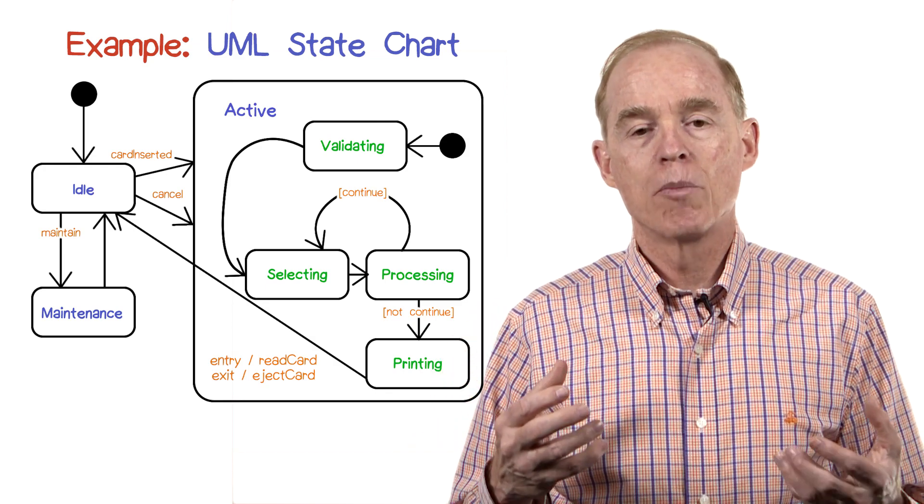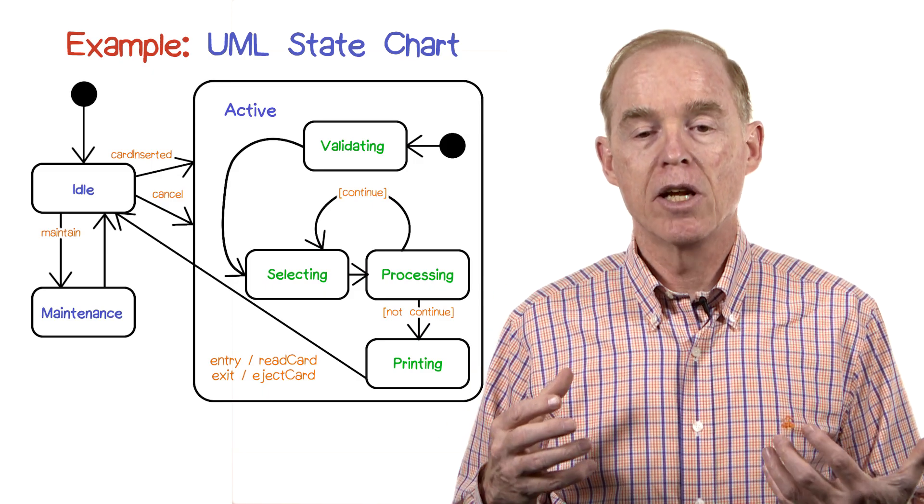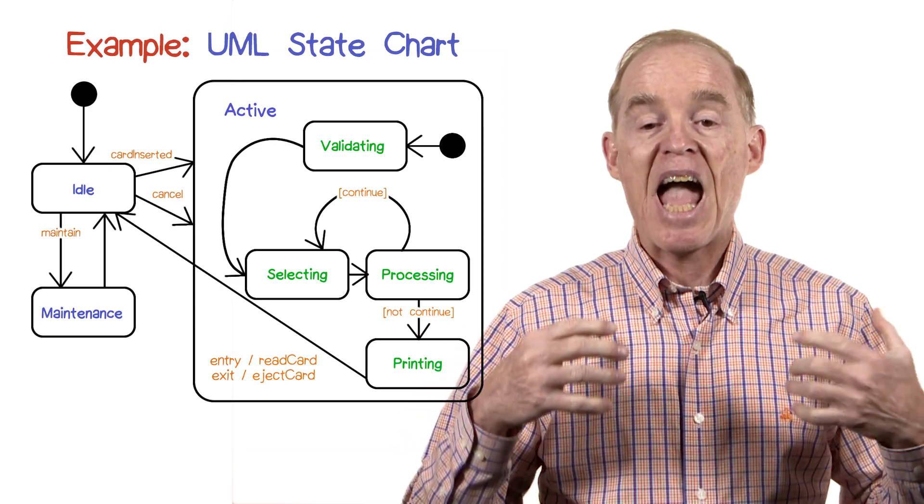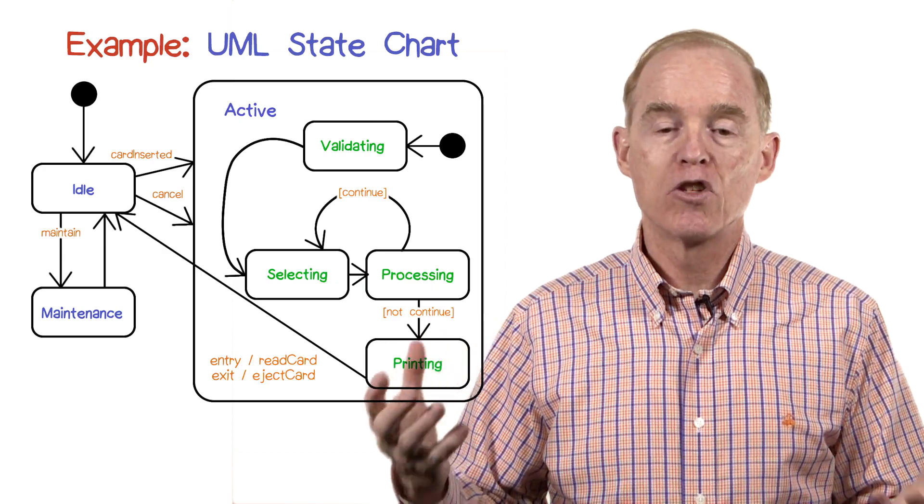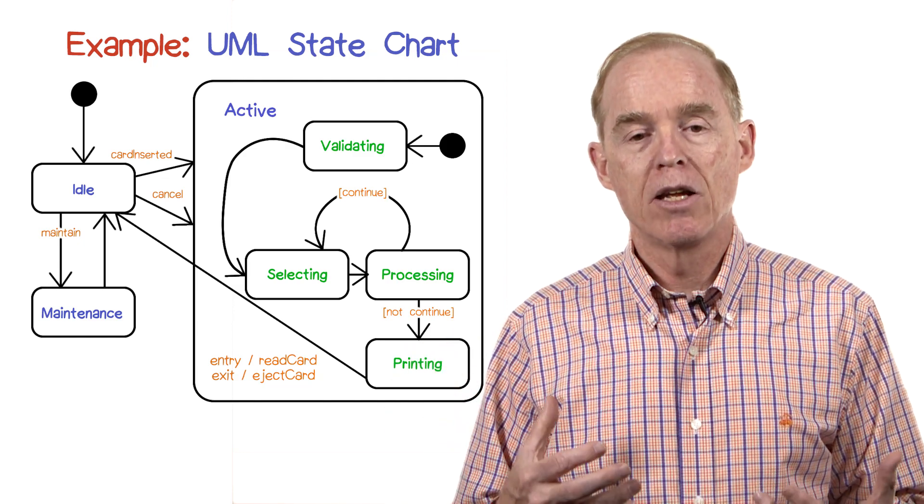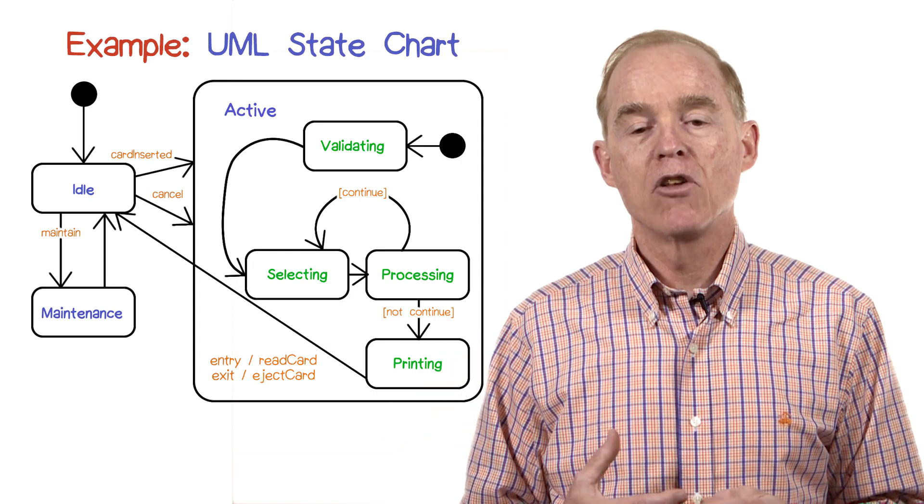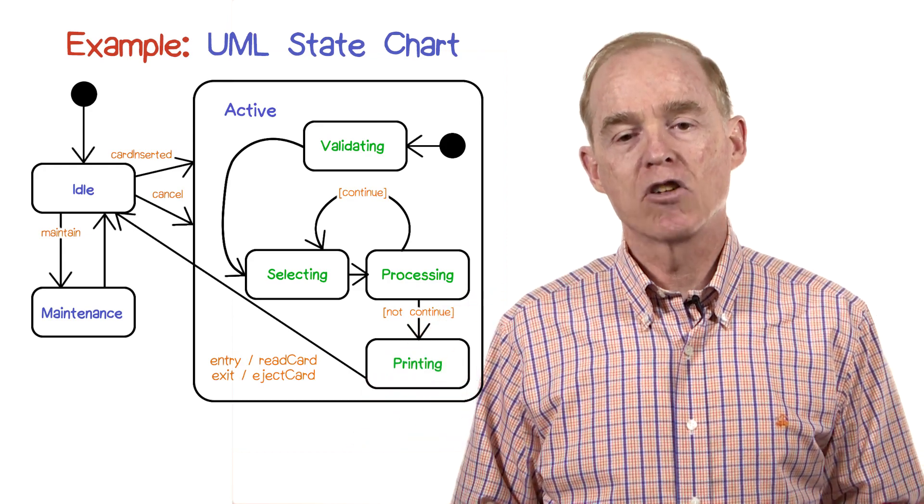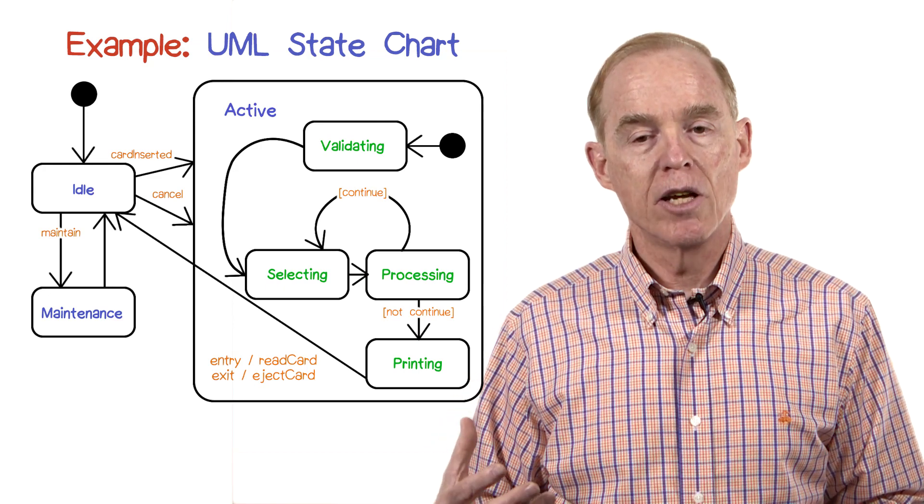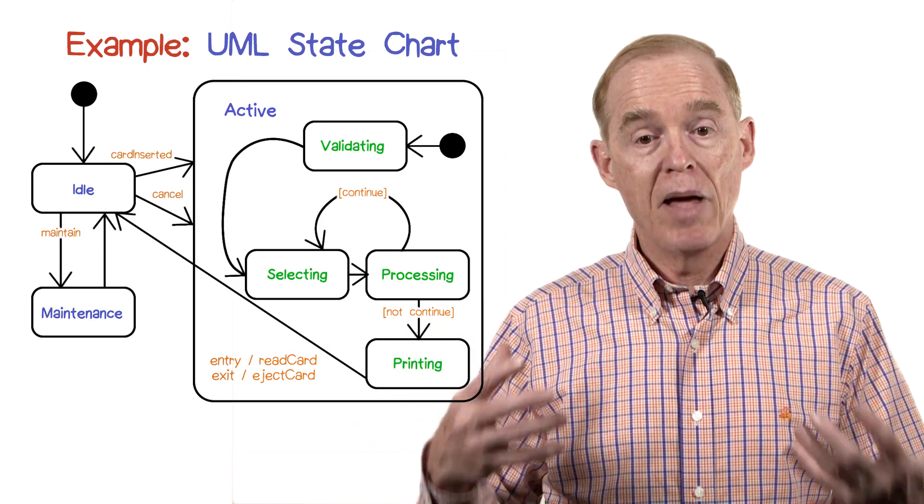The other thing to notice about this particular example is that in the bottom on the left of the active state, there are two lines of text, one labeled entry and one labeled exit. These are actions that will take place upon respectively entry and exit from the inner state machine. That is, when a transition from idle goes to active, before anything else happens, the read card action will be executed. Likewise, upon exit from the printing state, when all the other work is done, the eject card action will take place.